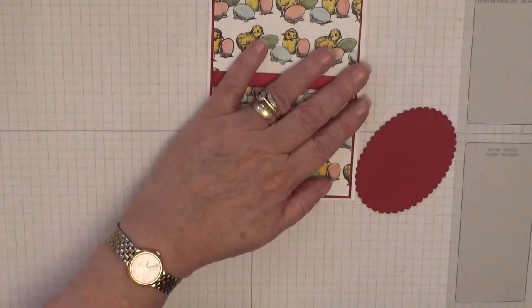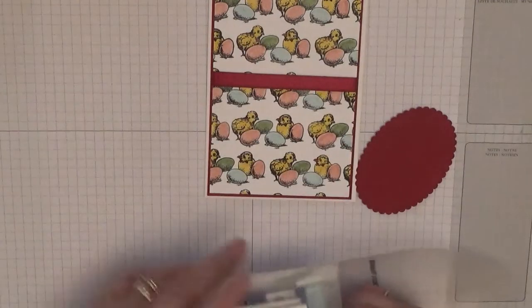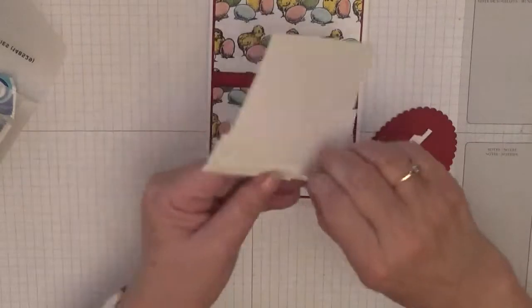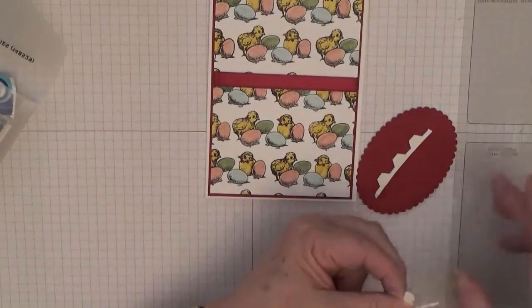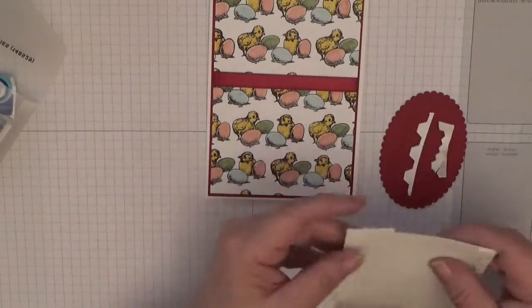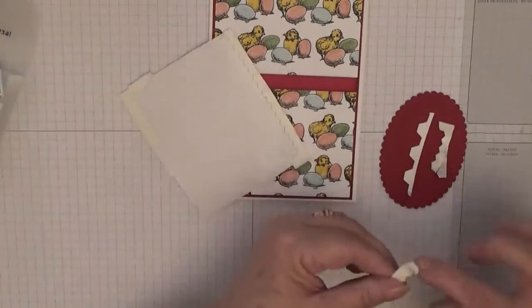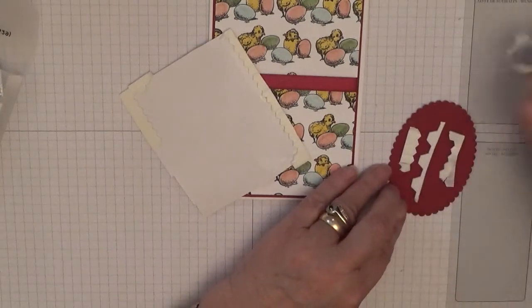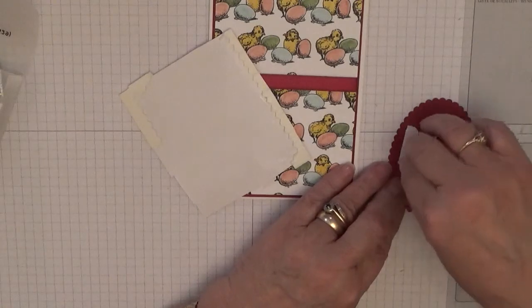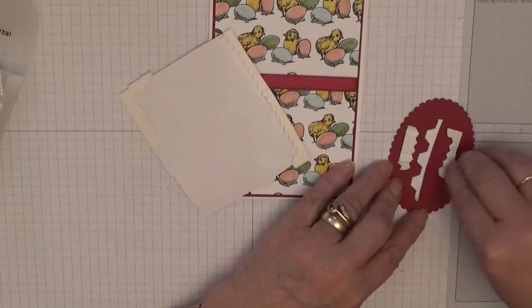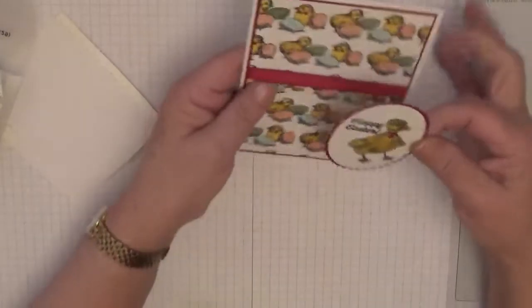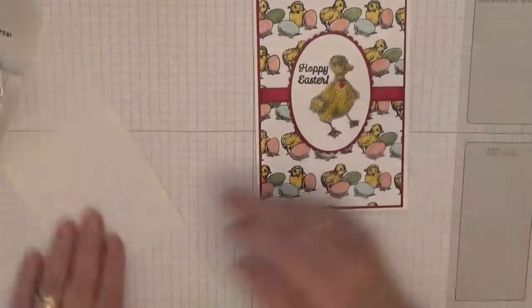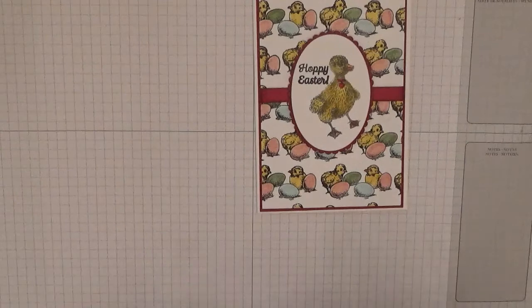And with this I'll stick it on dimensionals. I'm going to use up bits, this card's made up of bits. I'm going to stick that in the middle of the ribbon and there you have it, one quick easy card with a free stamp set.